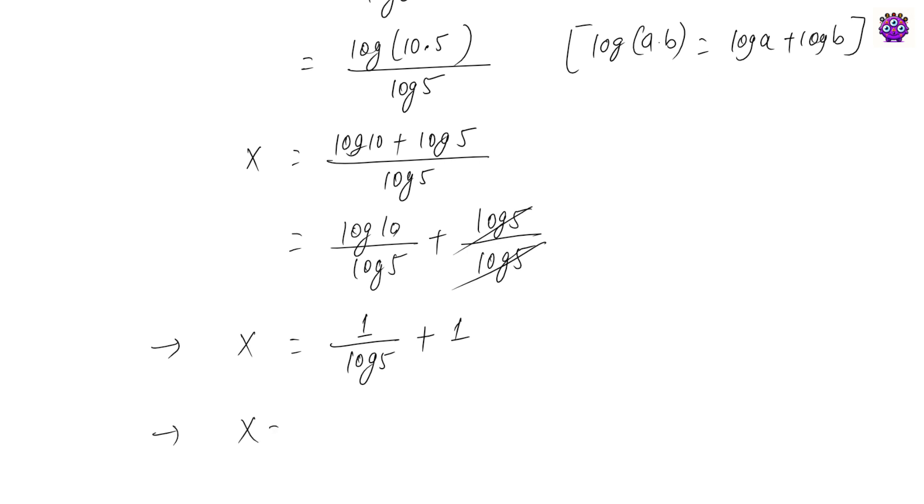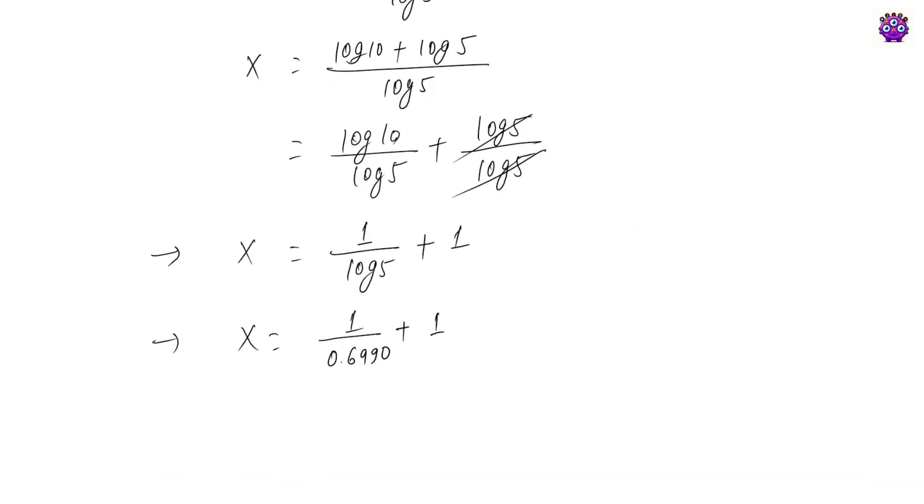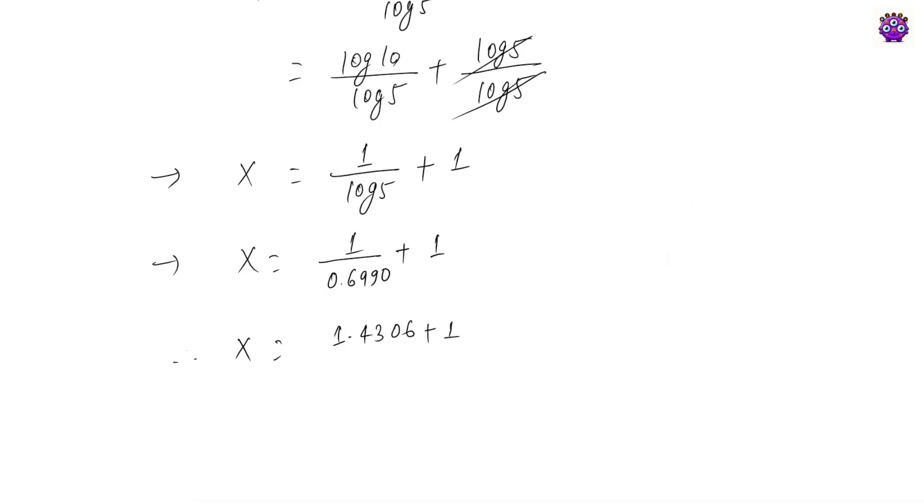x equals 1 over—log 5 equals 0.6990—plus 1. And 1 over 0.6990 equals 1.4306 plus 1. If you add this, 1 plus 1.4306, then we'll get x equals 2.4306.